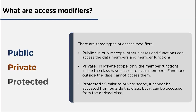In the private access modifier, only the member functions inside the class have access to the class members — functions outside the class cannot access them. For example, a house is a private property; any member outside the family cannot access the house without permission. Only members inside the family can access it.